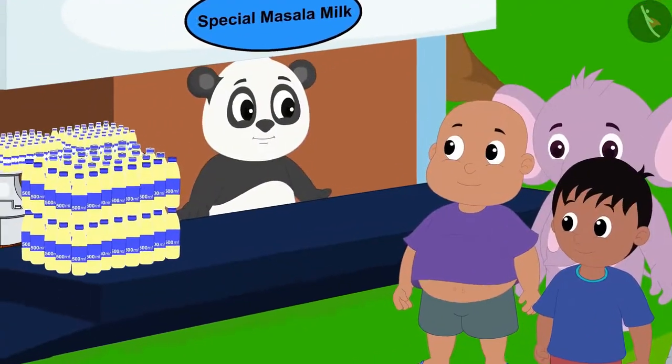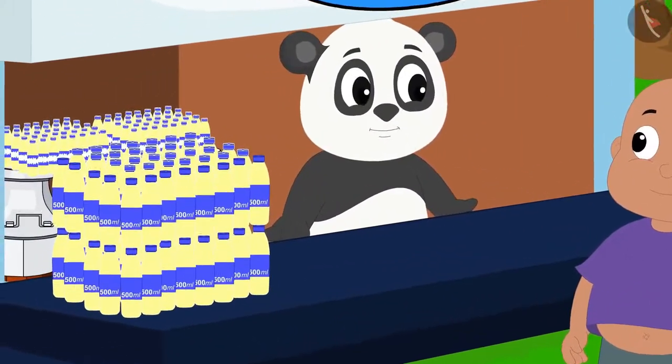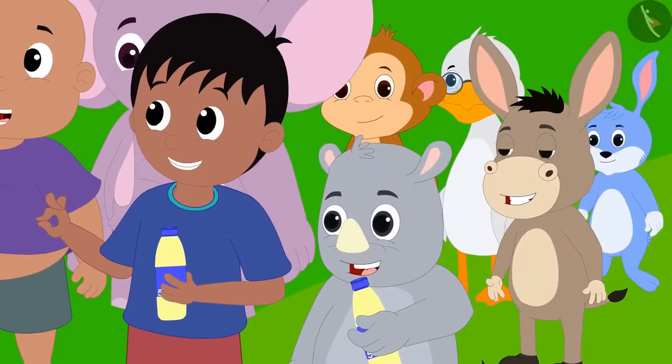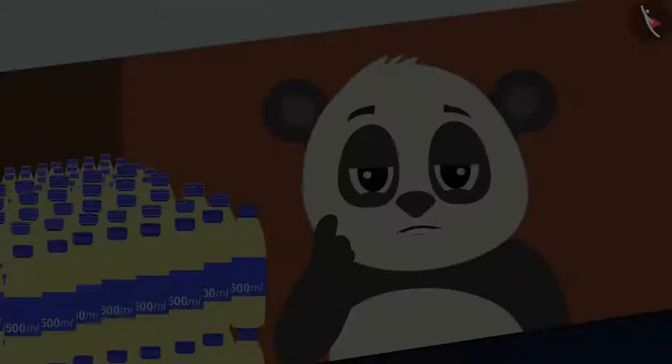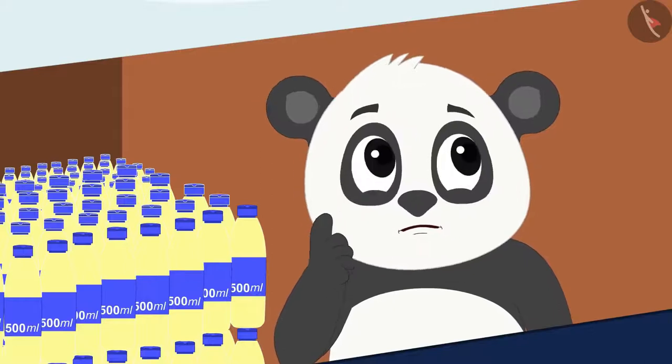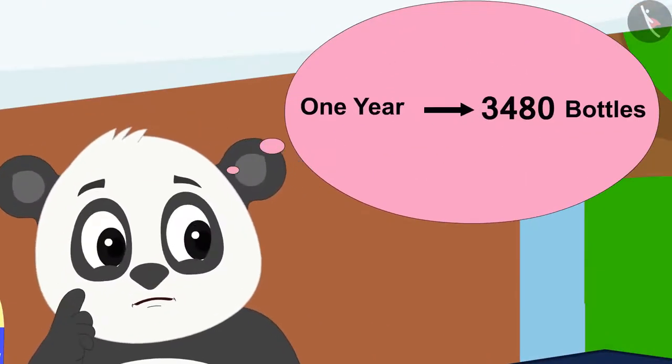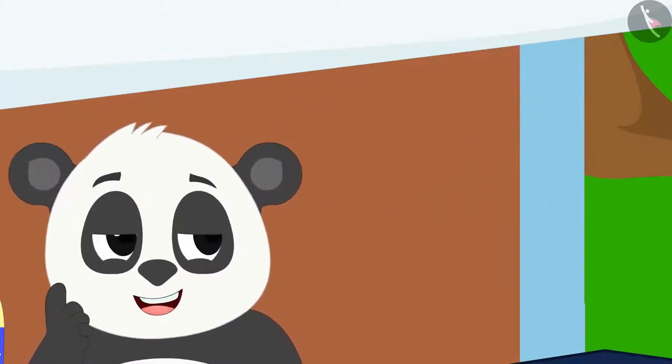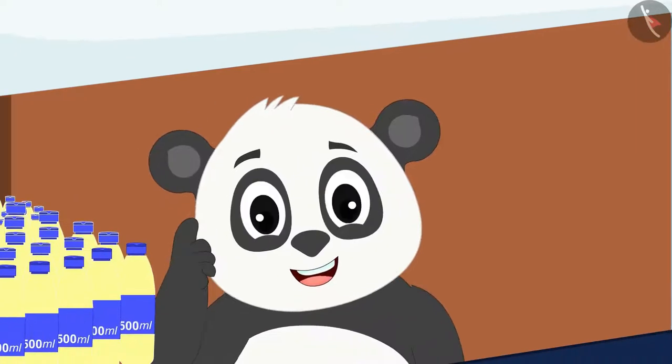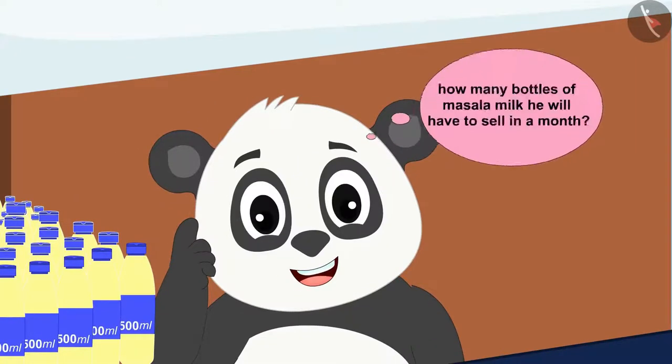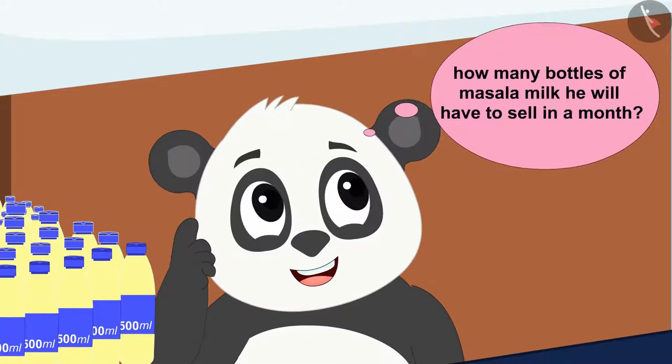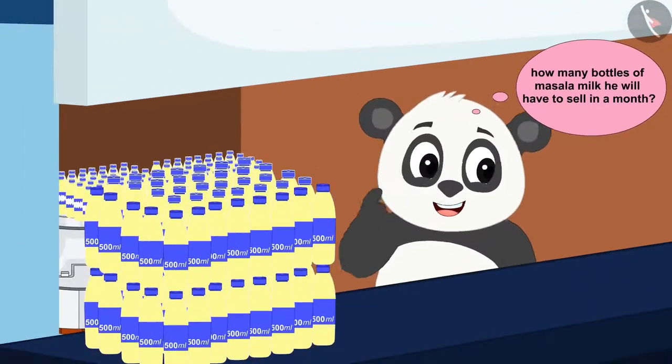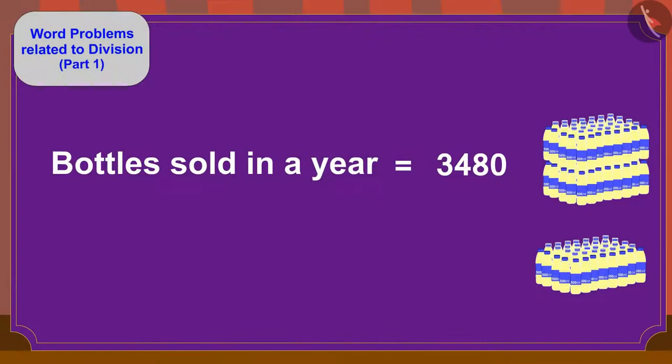Golu has started selling a special masala milk at his dairy. Everybody likes that masala milk very much. Golu has realized that if he sells 3480 bottles in a year, he will make very good profits. Now Golu is trying to find out how many bottles of masala milk he will have to sell in a month.